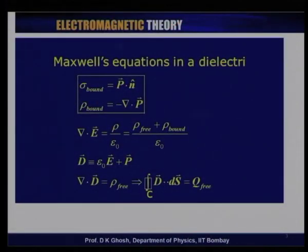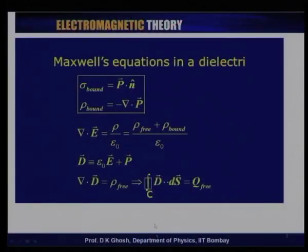Let us look at what this does to Maxwell's equation. The divergence of the electric field is given by ρ/ε₀, where ρ is the charge density. When talking about a dielectric medium, the charge density has two components: a free component, which is the type of charges we had in electrostatics in vacuum, and the bound charges. Since ρ is the net volume charge density, the divergence of E is given by (ρ_free + ρ_bound)/ε₀.